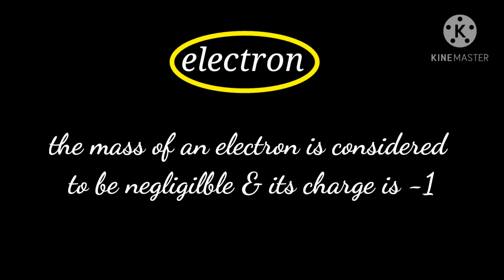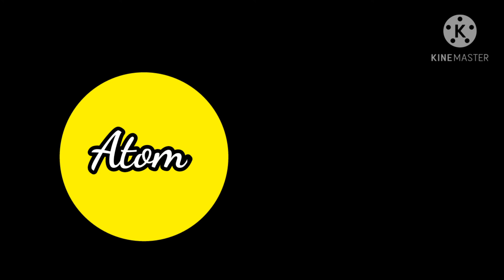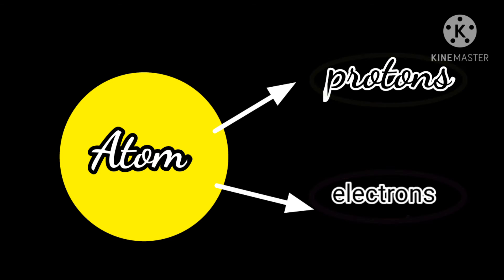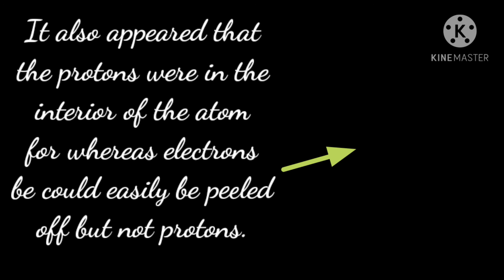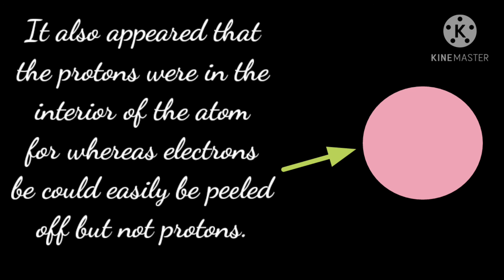It seemed highly likely that an atom was composed of protons and electrons, mutually balancing their charges. It also appeared that protons were in the interior of the atom, whereas electrons could easily be peeled off, but not protons.